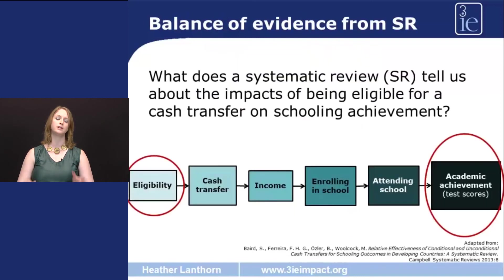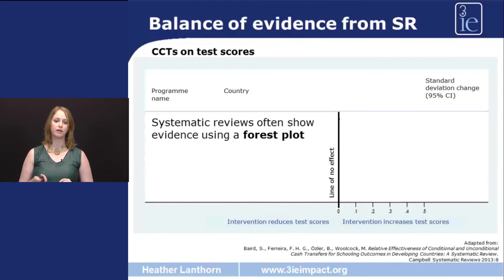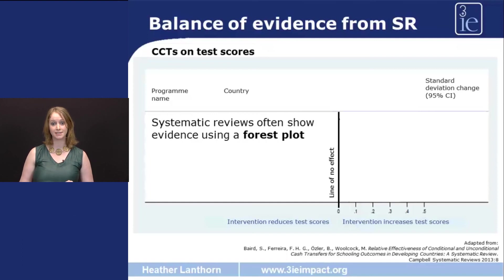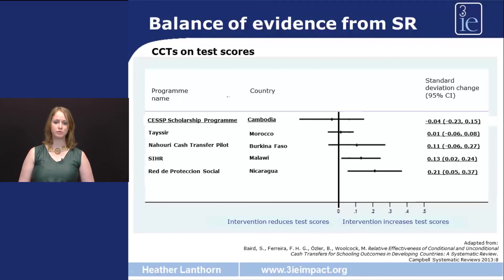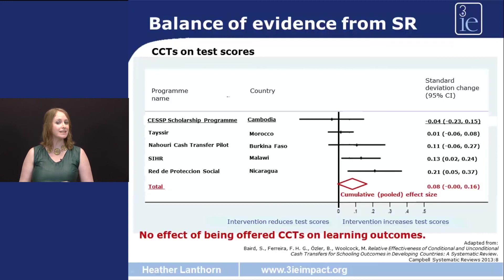But notice that when we change the outcome of interest from attendance to test scores, the discontinuity goes away — the scholarship does not seem to change test scores among students, even though it does change attendance. Now let's think about this Cambodia study within the balance of evidence from a systematic review that looks at cash transfers and academic achievement. The results from systematic reviews are often displayed on a forest plot. On the x-axis, we see the line of no effect; to the left, programs that actually decrease test scores; and to the right, the outcome we'd like to see — an improvement of test scores as a result of offering the treatment. Here's our Cambodia program, and as we see, offering the scholarship actually seems to slightly lower test scores. But with the balance of evidence, other programs have no effect or a slightly positive effect, and our cumulative pooled effect size suggests no or a slightly positive effect of being offered a conditional cash transfer on educational outcomes.